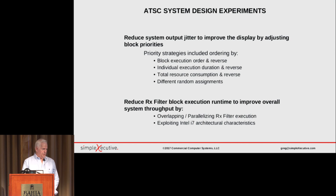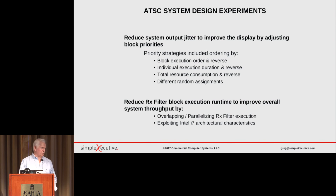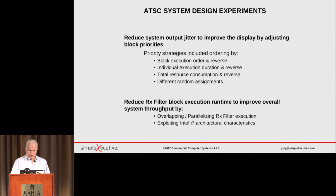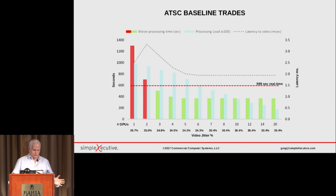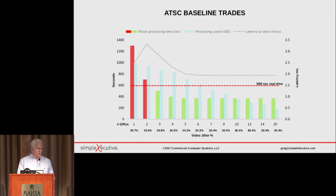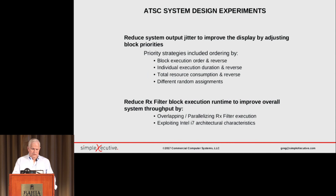We recognized immediately that the RX filter was the tent pole. Once the RX filter is running to capacity — running continuously — everybody downstream is going to be starved. Since the RX filter takes more resources than anybody else, everybody downstream takes less resource and will finish faster than the RX filter. That explains the previous chart: why it leveled off. Once you turn the corner at about four machines, it didn't matter — you could add any number of processors and get no improvement in throughput. The average load per processor will go down, but there will be no system-level improvement.